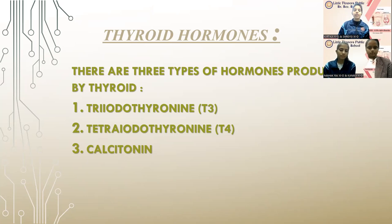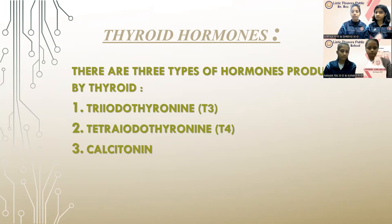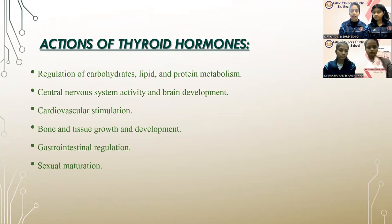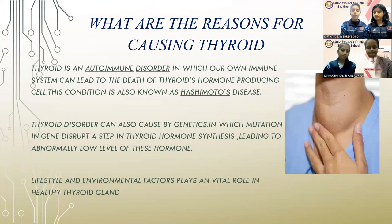Thyroid hormones. There are three types of hormones produced by the thyroid: triiodothyronine, commonly known as T3; tetraiodothyronine, commonly known as T4; and calcitonin. Actions of thyroid hormones: they regulate carbohydrate, lipid and protein metabolism; central nervous system activity and brain development; cardiovascular stimulation; bone and tissue growth and development; gastrointestinal regulation; and sexual maturation. My friend Kanika will now explain the reasons for causing thyroid disorders.